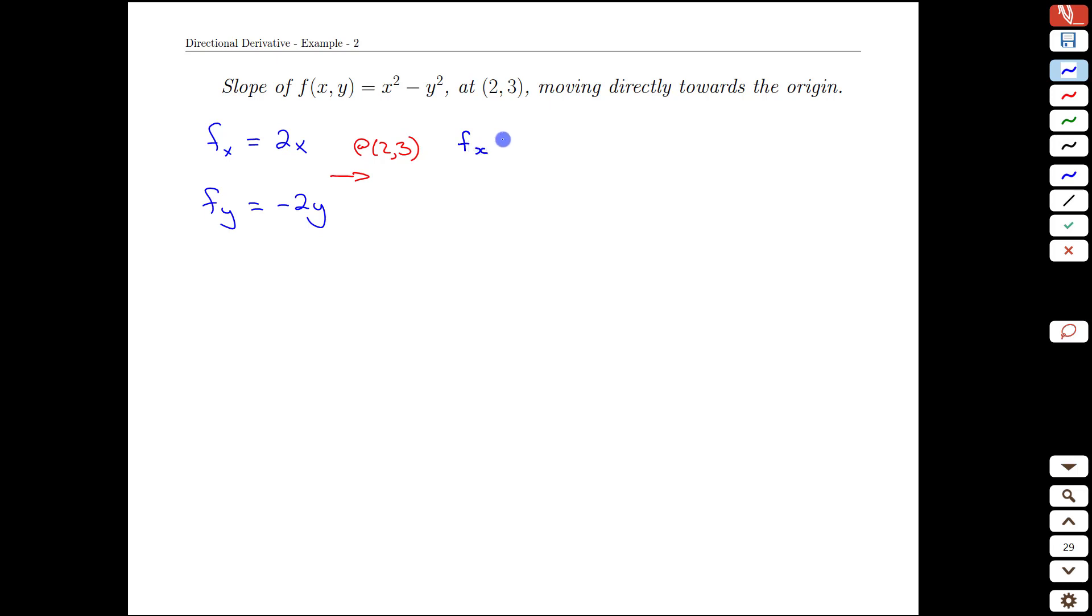So the x derivative at (2,3) is going to be 2 times the x which is 2, so 2 times 2 which is 4. The y derivative at (2,3) is going to be -2 times the y coordinate which is 3, so -2 times 3 which is -6.